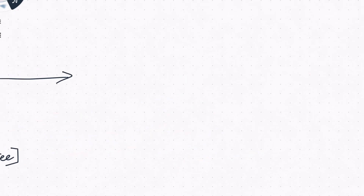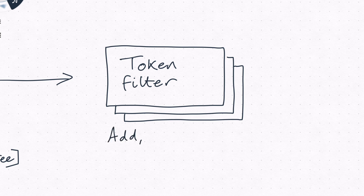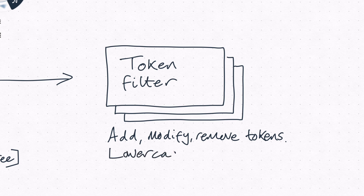The tokens produced by the analyzer are sent to the final step, the token filters. Token filters add, modify, or remove tokens produced by the tokenizer. This is another optional step, and like character filters, multiple token filters can be used in the analyzer. Token filters typically perform tasks like converting tokens to lowercase, removing tokens you don't want — like very short, common, or rude words — and stemming, which reduces a word to its root form.